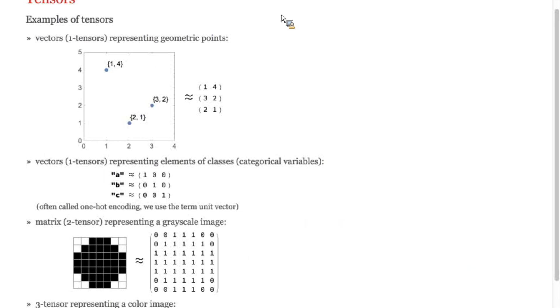Here's some simple examples of tensors and what kinds of data they can be used to represent. Vectors can be used to represent points or encodings of discrete classes. You can see these points correspond to these two vectors, and these classes A, B, and C, labels of classes correspond to these one-hot encoded vectors.